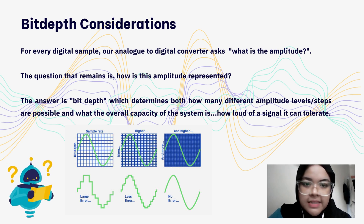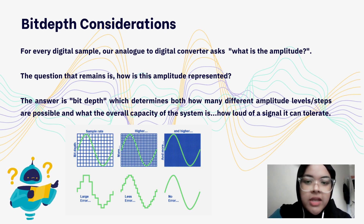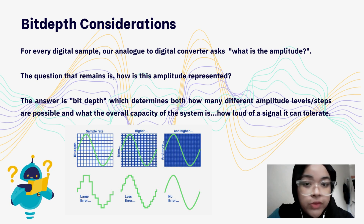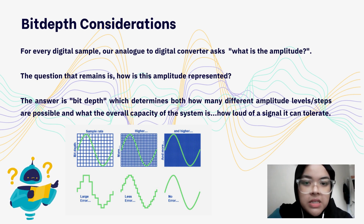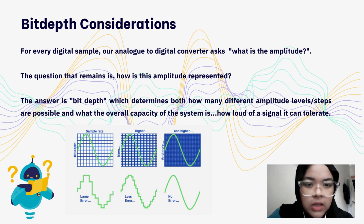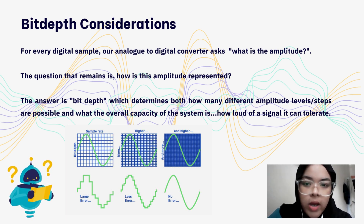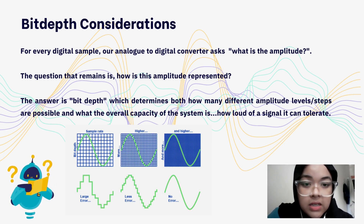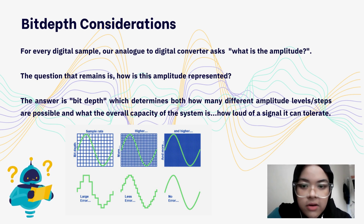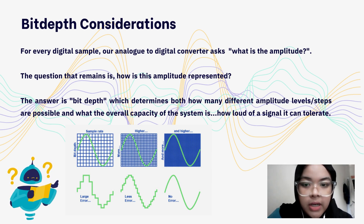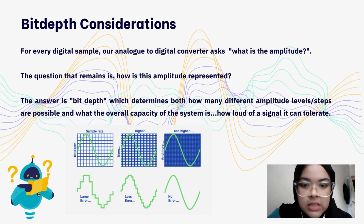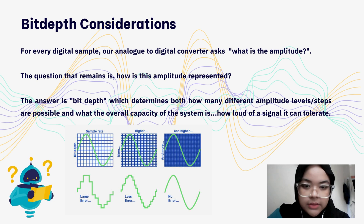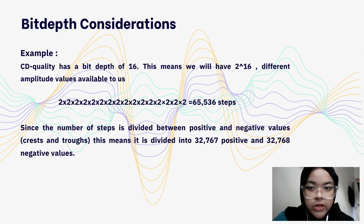For every digital sample, our analog-to-digital converter asks: what is the amplitude? The bit depth determines both how many different amplitude levels or steps are possible and what the overall capacity of the system is — essentially how loud a signal it can tolerate. As you can see from the sample rate diagram, the higher the sample rate and the higher the bit depth, the higher the accuracy and the lesser the error.